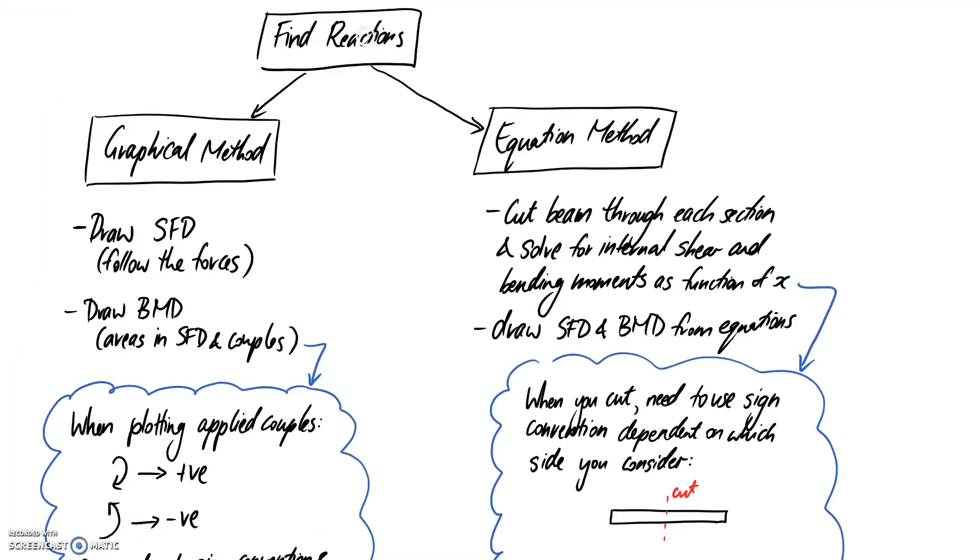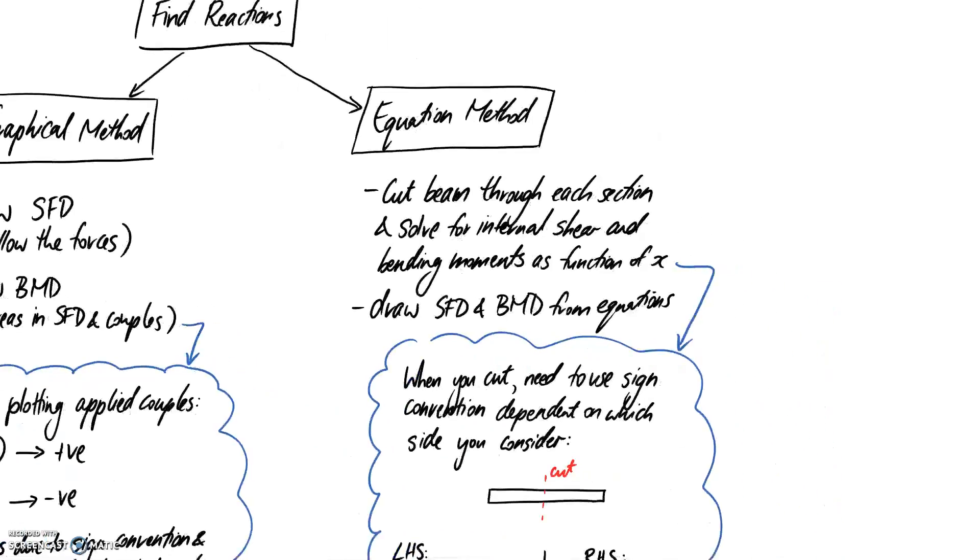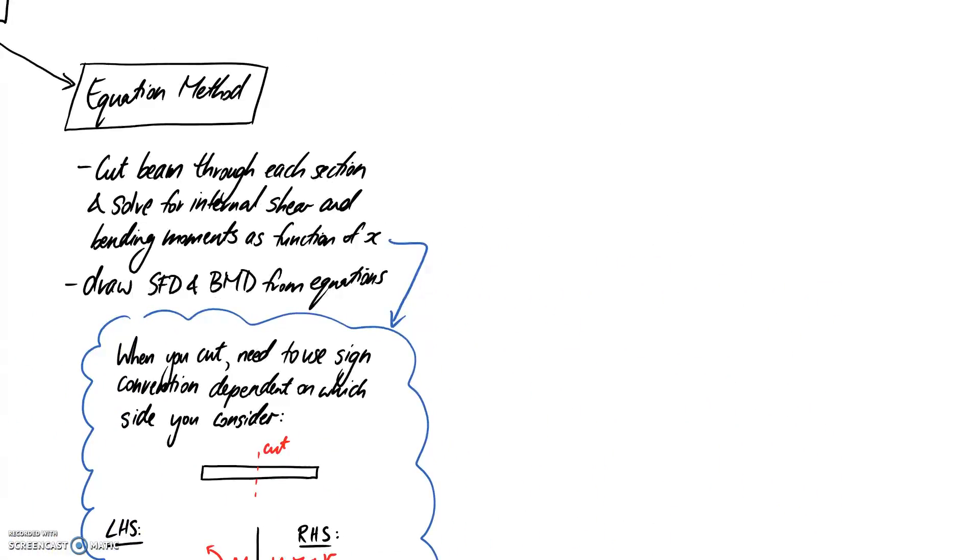Again, the first thing you need to do is find the reactions, but if you choose the equation method, we've got a slightly different procedure to implement. With the equation method, it's all about cutting your beam. You're going to need to cut it up into several different sections. Based on every time the loads change, you're going to need to create a new section to perform a cut through.